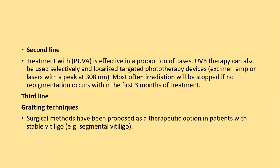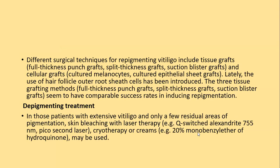Third-line treatment includes surgical methods like grafting techniques, especially for stable and segmental vitiligo. Different surgical techniques include tissue grafts — full-thickness punch grafts, split-thickness grafts, suction blisters — and cellular grafts such as melanocyte cultures, cultured epithelial sheet grafts. The three tissue graft types have comparable success rates in inducing repigmentation.